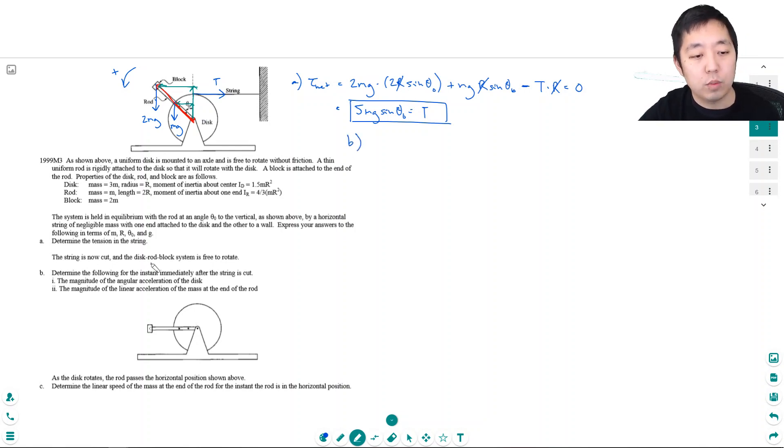The string is now cut and the disk rod block system is free to rotate. Determine the following for the instant immediately after the string is cut: the magnitude of the angular acceleration of the disk. Immediately after the string is cut, the net torque is just all of this except the tension. So the only these are the only two causing torques. That's equal to 5mg sin theta naught. And that's equal to I alpha.